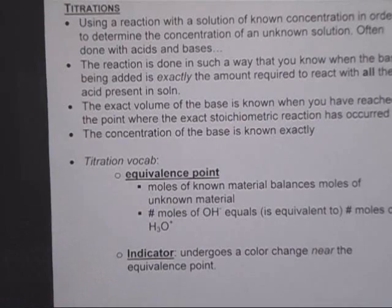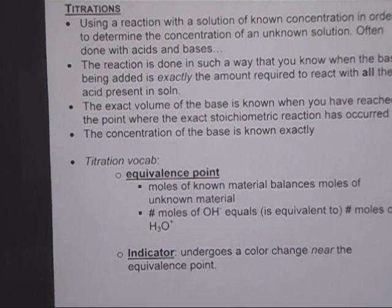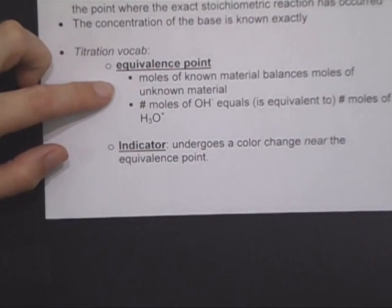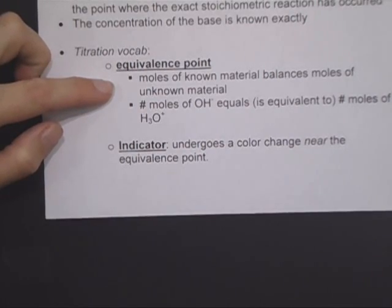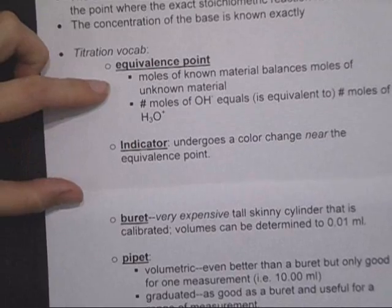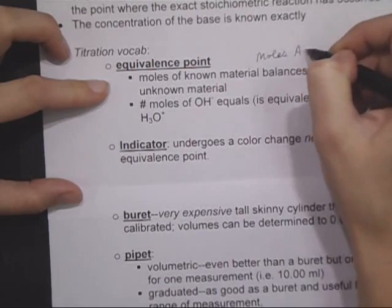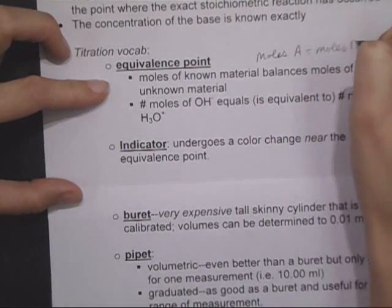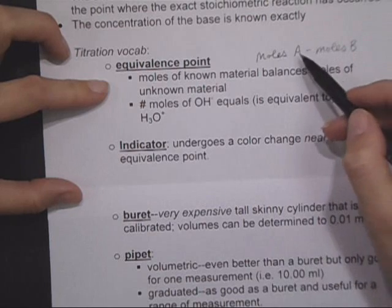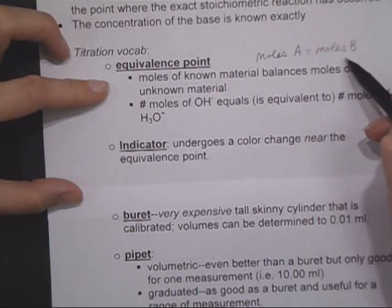A titration is essentially a laboratory skill where you're using two chemicals and the proportions of the chemicals where you know the concentration of one but not the other to figure out the unknown's concentration. The whole point of a titration is to reach what's known as the equivalence point, where the moles of one substance are equal to the moles of the second substance. In a lot of cases, that's an acid and a base.